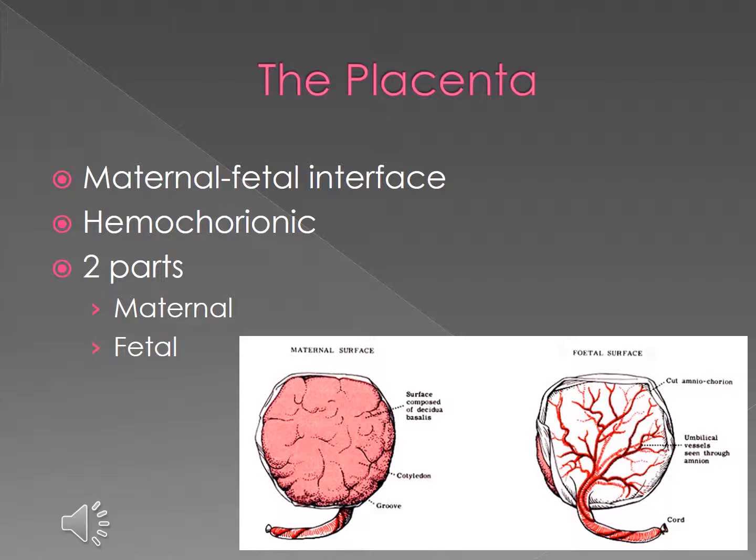It has two parts. The villus chorion, the fetal part, is smooth with the insertion of the umbilical cord, and outlines of the umbilical vessels can be seen through the amnion. The decidua basalis, the maternal part, is divided into irregular convex areas. Cotyledons are separated by the placental septa.